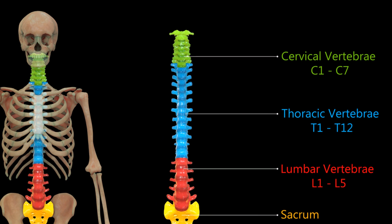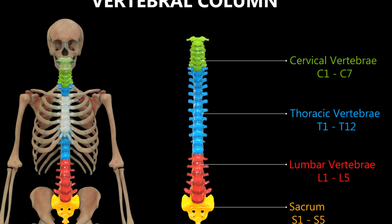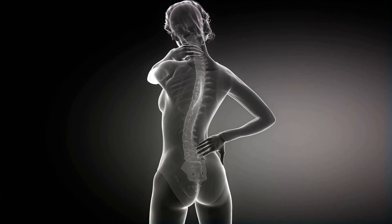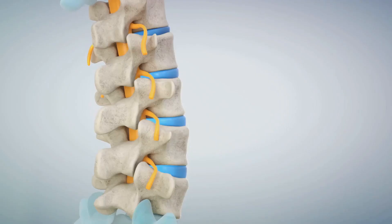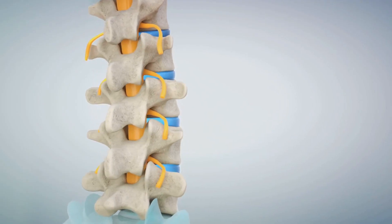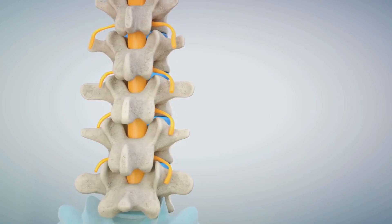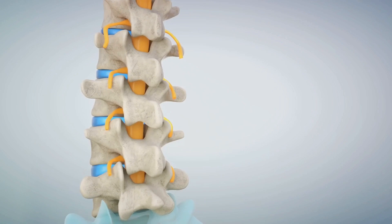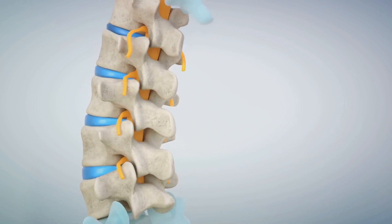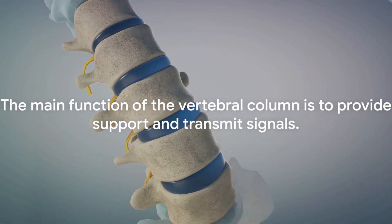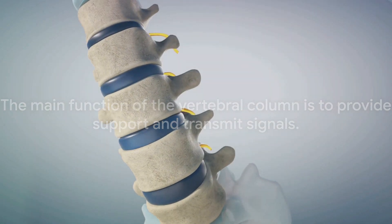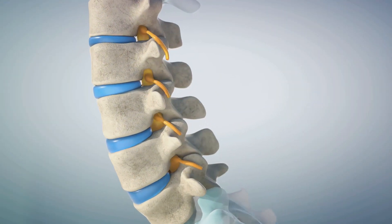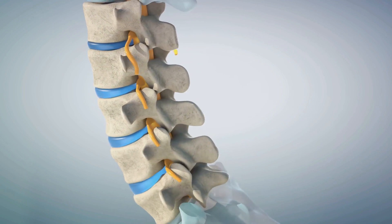Let's now turn our attention to the vertebral column, the main axis of the body. The vertebral column, or spine, is a stack of 33 small bones known as vertebrae. In between each vertebra, we find the intervertebral disc, a kind of cushion that serves as a shock absorber and reduces friction during movement. The main function of the vertebral column is all about support — both for the body, providing structure and balance, and for the spinal cord, which transmits signals from the brain to the rest of the body.